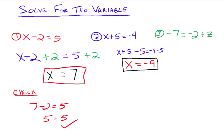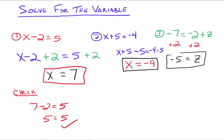Let's try one more: negative 7 equals negative 2 plus z. It does not matter which side of the equals sign we isolate the variable. We need to get rid of this negative 2, so we add 2 to both sides. That gives us negative 7 plus 2, which is negative 5, and negative 2 plus positive 2 goes to 0, leaving just z. So z equals negative 5. Checking: negative 2 plus negative 5 equals negative 7, which is true, so that's the solution.